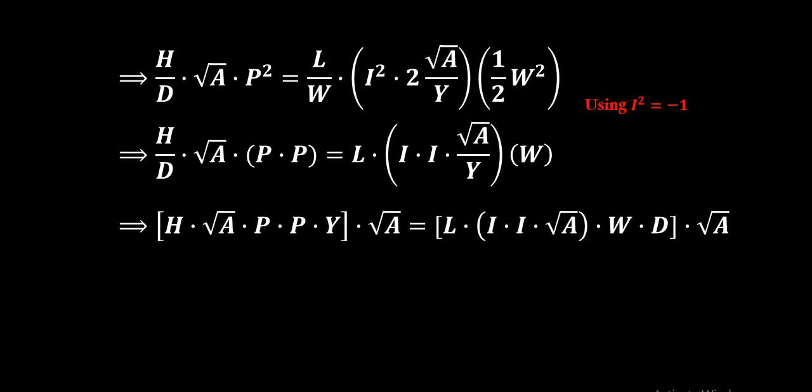One option is to cancel root A from both the side. The other option is multiply both sides. Then in the left hand side root A into root A gives us A only. To the right hand side also root A into root A gives us A.